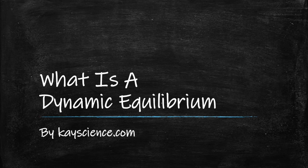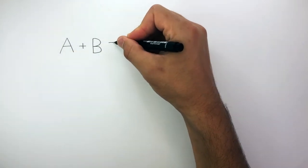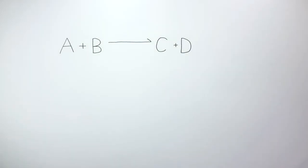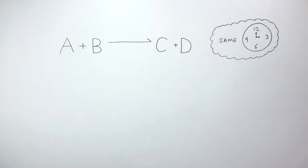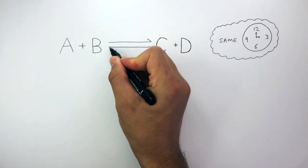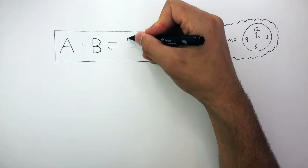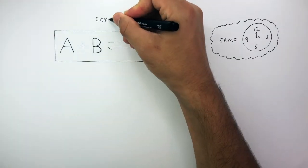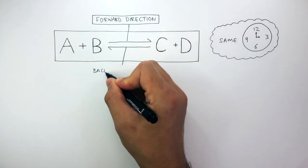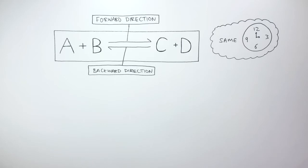What is a dynamic equilibrium? A reacting with B in the forward direction forms C and D, and this is a reversible reaction. At the same time, C reacts with D in the backward reaction to form A and B. A and B forming C and D is the forward direction, and C and D forming A and B is the backward direction.